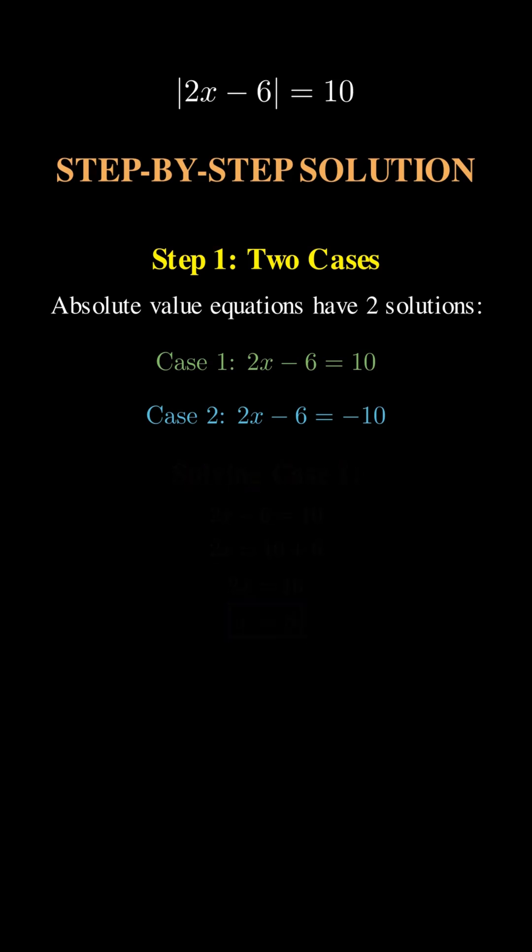Case 2. What if 2x minus 6 is negative? Then 2x minus 6 equals negative 10. Let's solve. Add 6 to both sides. 2x equals negative 4. Divide by 2. x equals negative 2. That's our second answer.